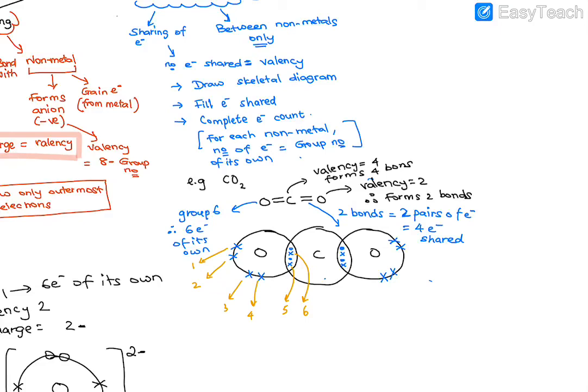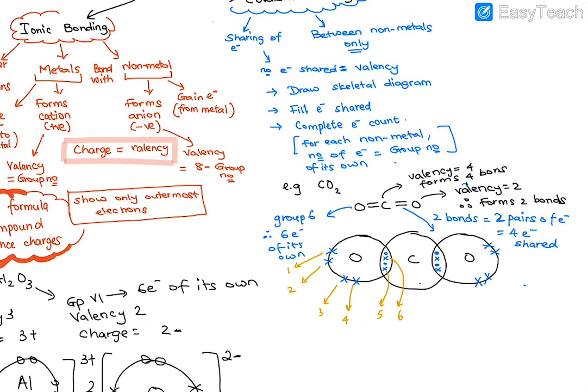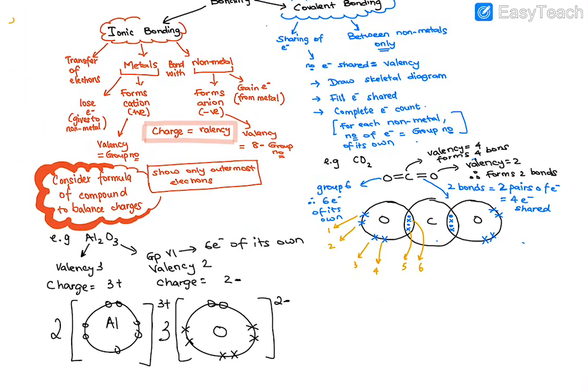Because oxygen has valency 2, it's going to form two bonds. Two bonds means two pairs of electrons, which means four electrons in total shared - two pairs, which means two dots and two crosses. So this is just an overview of ionic and covalent bonding.